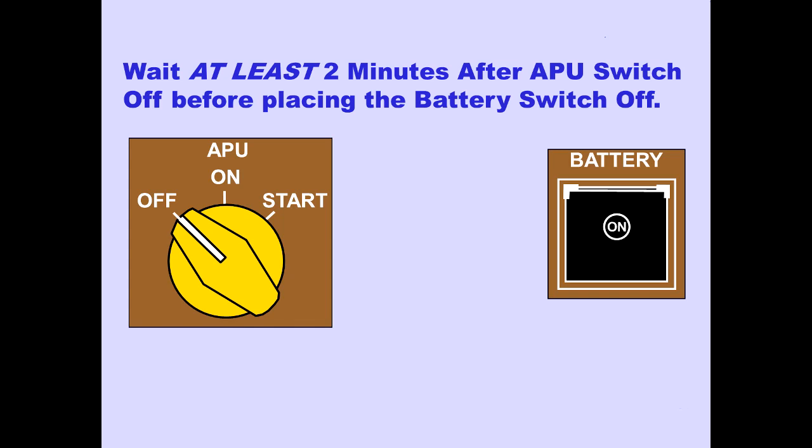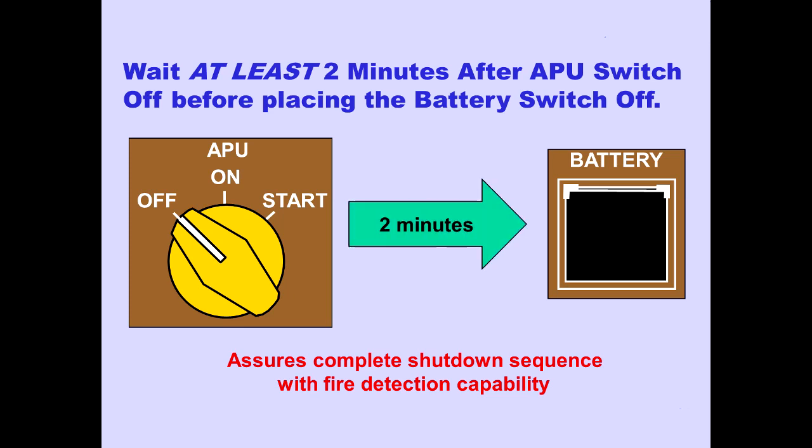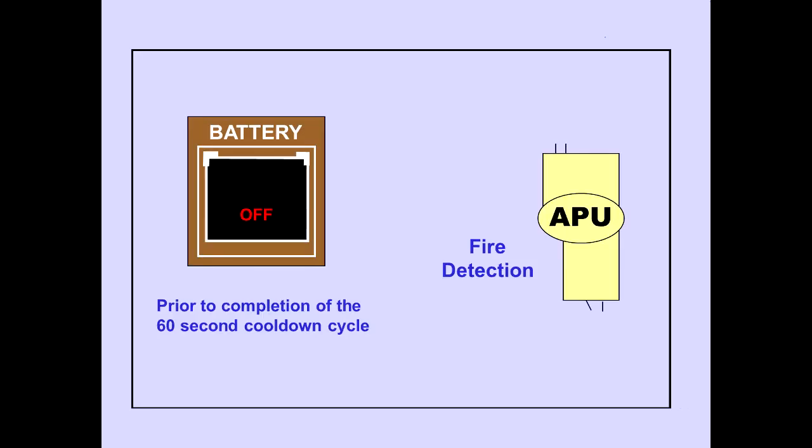If you are securing the airplane, a complete shutdown sequence with fire detection capability can be assured by waiting at least two minutes after the APU selector is rotated to the off position before placing the battery switch off. If the battery switch is positioned off prior to the completion of the 60-second cool-down cycle, the APU shuts down without a delay. With the battery switch off though, the APU will be without fire detection capability for the remainder of the shutdown sequence.